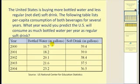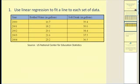As you can see, the gallons of bottled water purchased is increasing, while the gallons of regular soft drink is decreasing. So what we first have to do is perform linear regression on this data. Let's go ahead and get our graphing calculators.